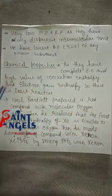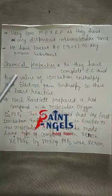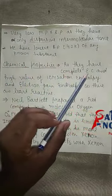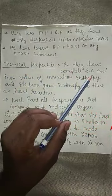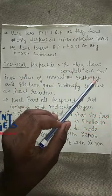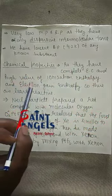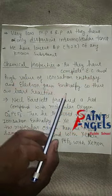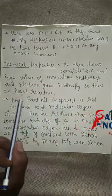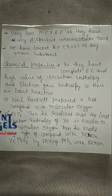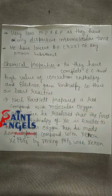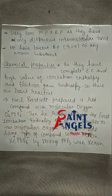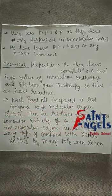Next, let's talk about chemical properties. As they have complete electronic configuration and very high values of ionization enthalpy and electron gain enthalpy, they are least active. In the stable electronic configuration, there is no tendency to gain or lose electrons.